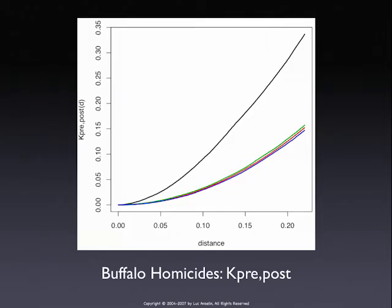The randomization envelope is shown, along with the complete spatial randomness reference line. The observed cross-K-function is way above the envelope for these two patterns. In this case it's the same phenomenon at two points in time, but you could also take two different phenomena at the same point in time, or two phenomena at different points in time. That doesn't matter.